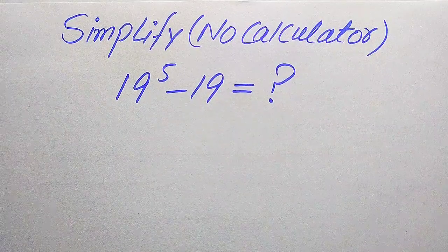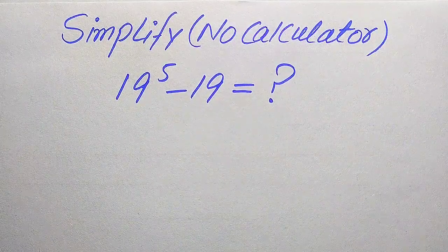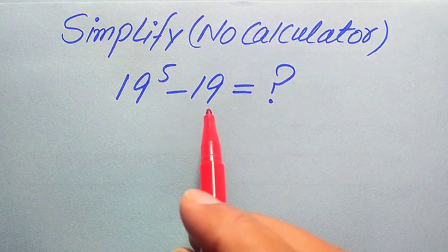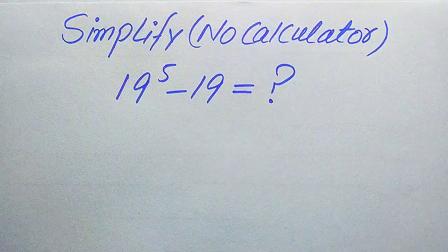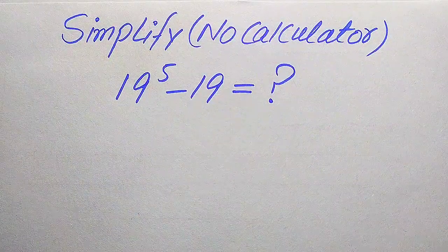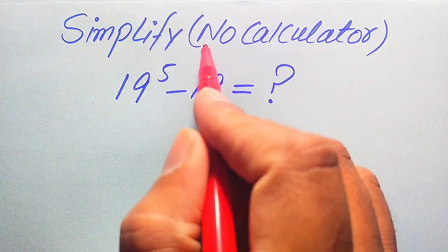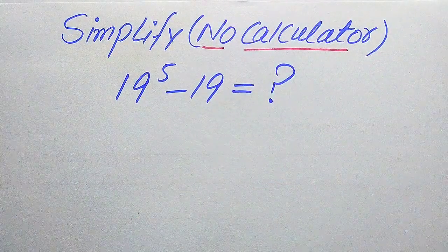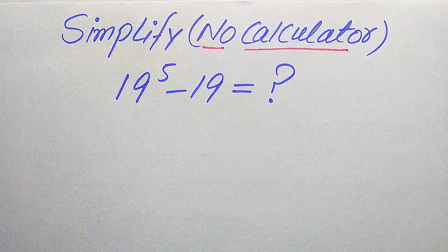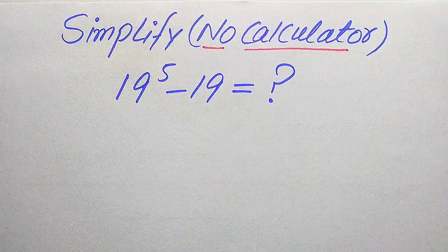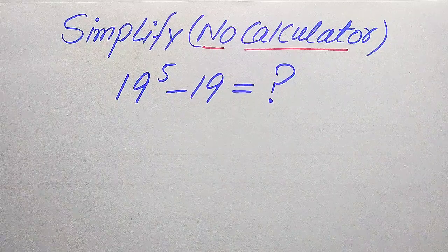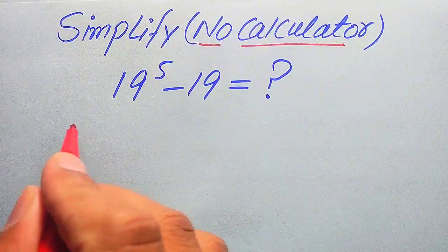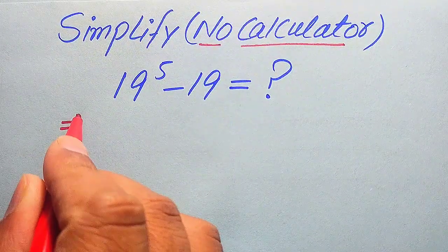Hello everyone. How to simplify this nice algebraic expression without using the calculator: 19 to the power of 5 minus 19. We write this algebraic expression into the lowest form. The one necessary condition is that the calculator is not allowed — we need to show all of the working on paper. If you have any other method in mind, please don't hesitate to write it in the comment section. Now we move towards the solution.